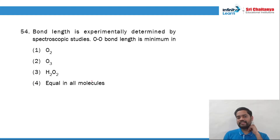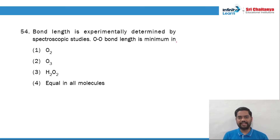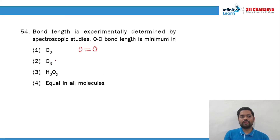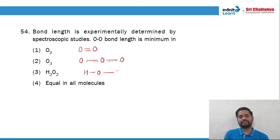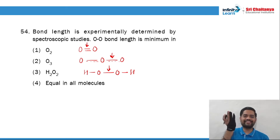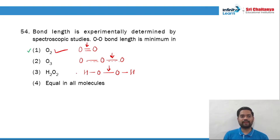Talking about question 54: bond length is experimentally determined by spectroscopic studies. Oxygen-oxygen bond length is minimum in O2, which is O=O (double bond). Ozone is O with partial double bond character, and H2O2 is a peroxide linkage — a pure single bond. So this is: single bond, partial double bond, and pure double bond. Bond order is increasing and hence bond length will be decreasing, so the smallest bond length will be of O2.